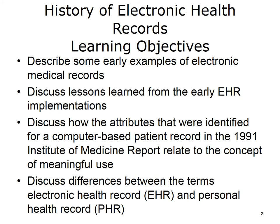The objectives for this unit, History of Electronic Health Records, are to describe some early examples of electronic medical records, discuss lessons learned from the early EHR implementations, discuss how the attributes identified for a computer-based patient record in the 1991 Institute of Medicine report relate to the concept of meaningful use, and discuss differences between the terms electronic health record (EHR) and personal health record (PHR).